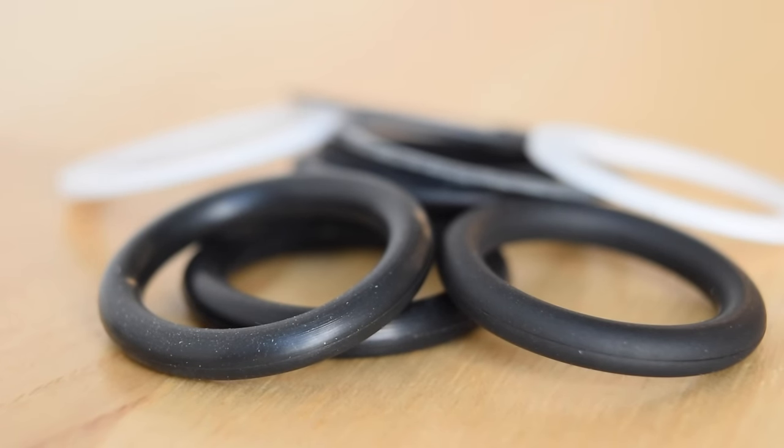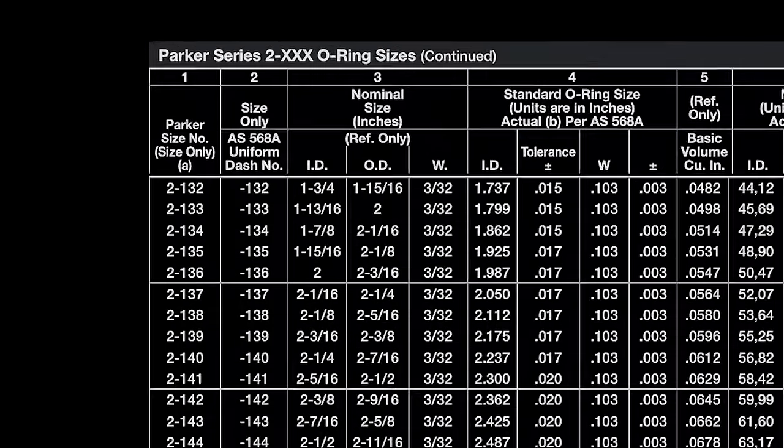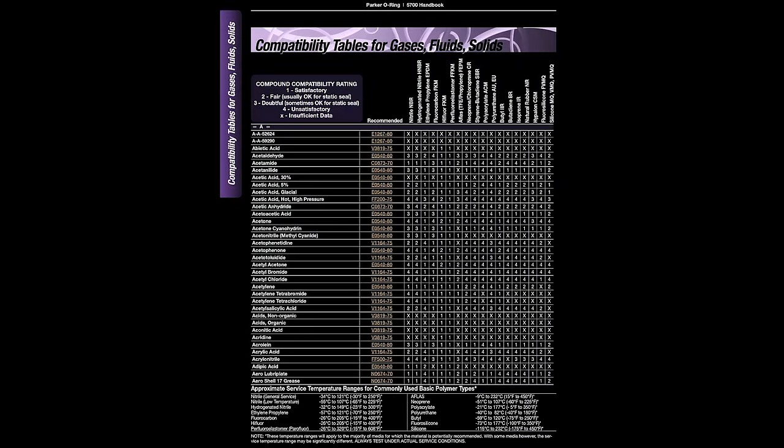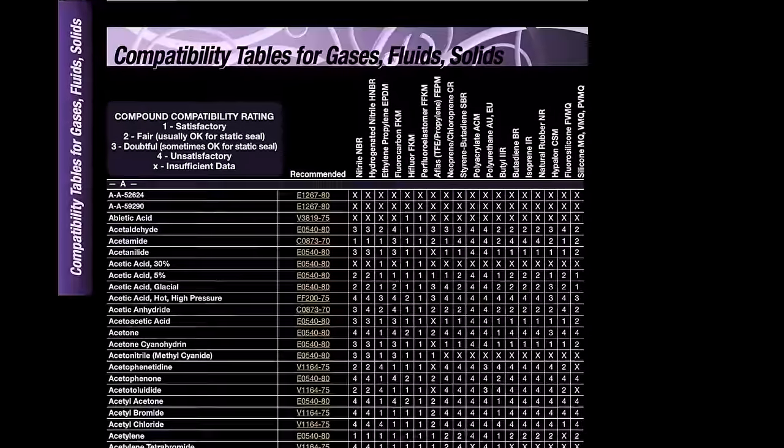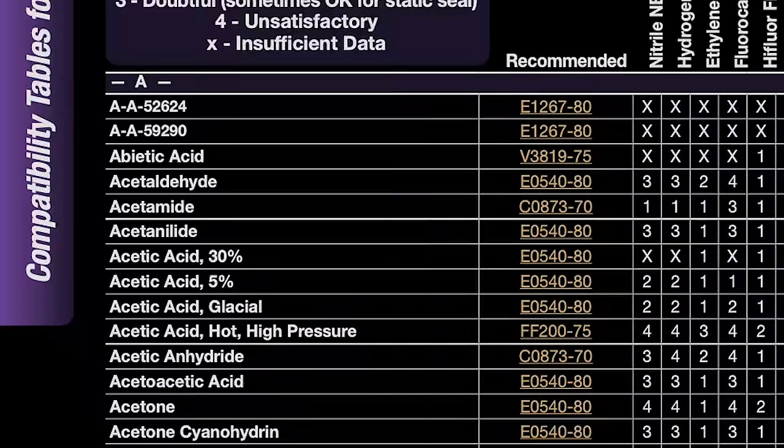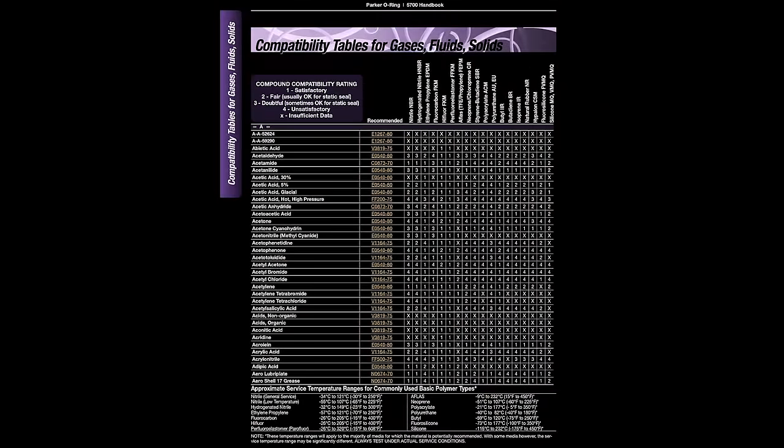Regardless of the gland design you select, you'll likely need to choose an off-the-shelf O-ring from a catalog. O-rings are available in standardized sizes. The most common standard is AS568, and each size is assigned a dash number. O-rings conforming to these sizes are available in many different materials. The primary considerations for selecting a material are the working fluid and the temperature. Design tables like this one and the Parker O-ring handbook are the easiest way to select a material that's appropriate for your application.